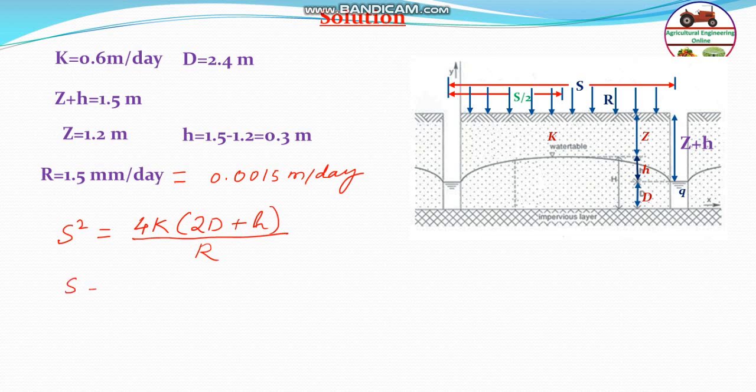From there we can put the spacing will be equal to square root of 4 into K is 0.6 into 2 into D, 2.4, plus H, 0.3, into again 0.3, divided by R is 0.0015. Straightforward, the answer will be getting from this, that is 49.48 meter.